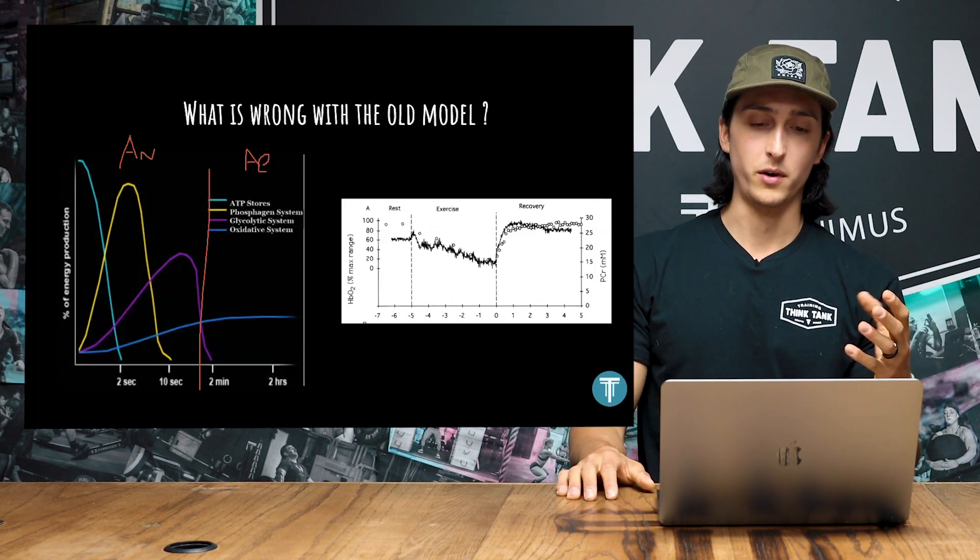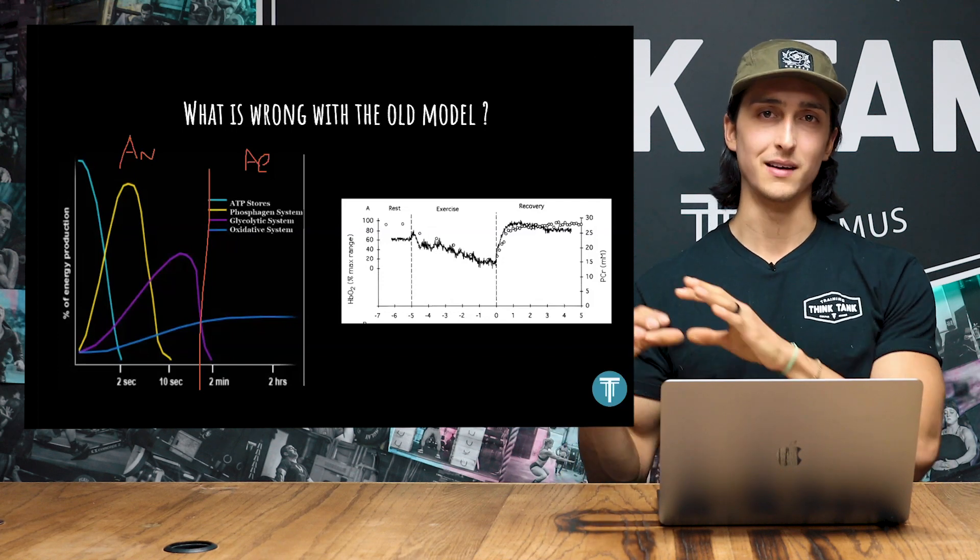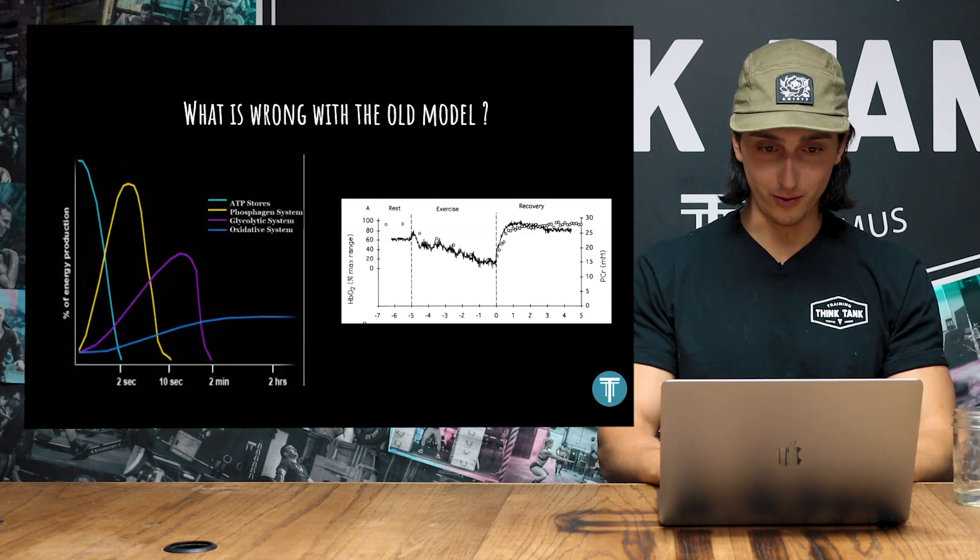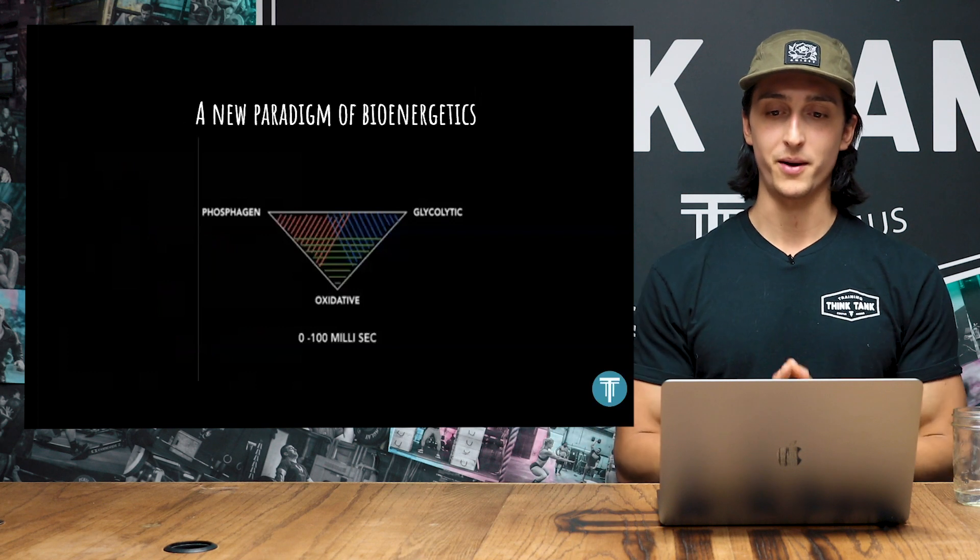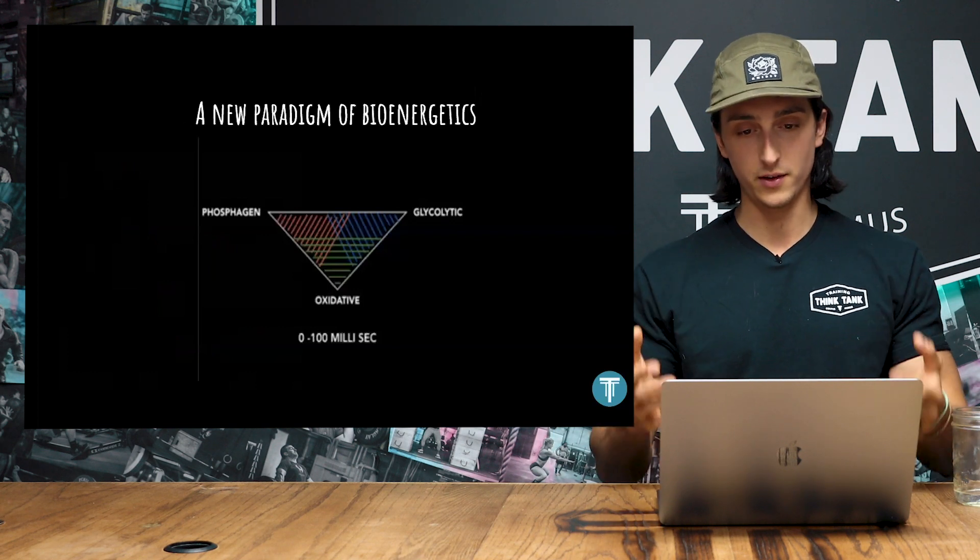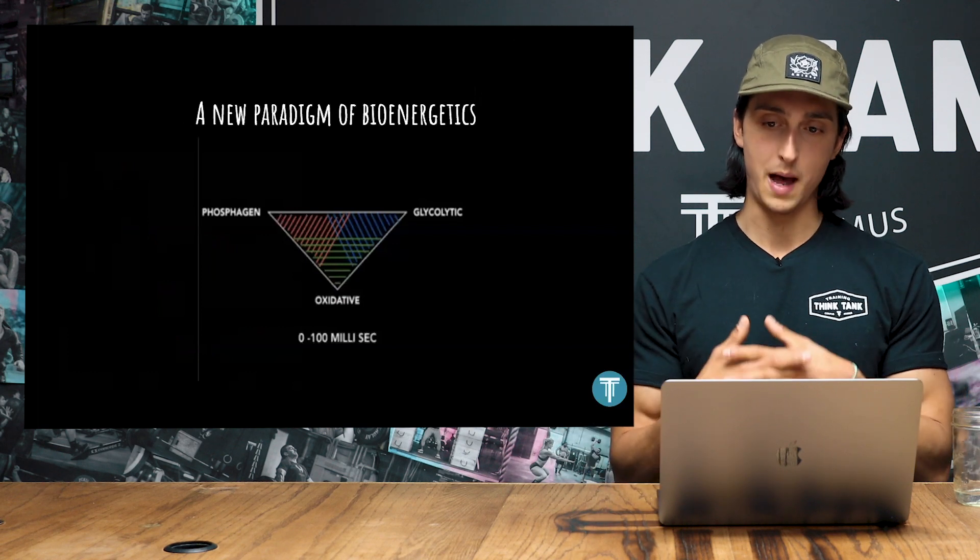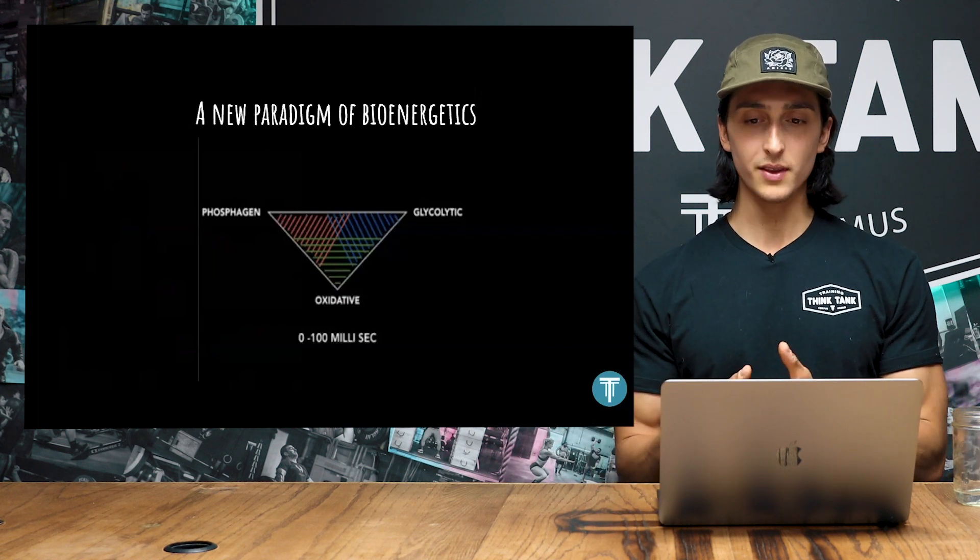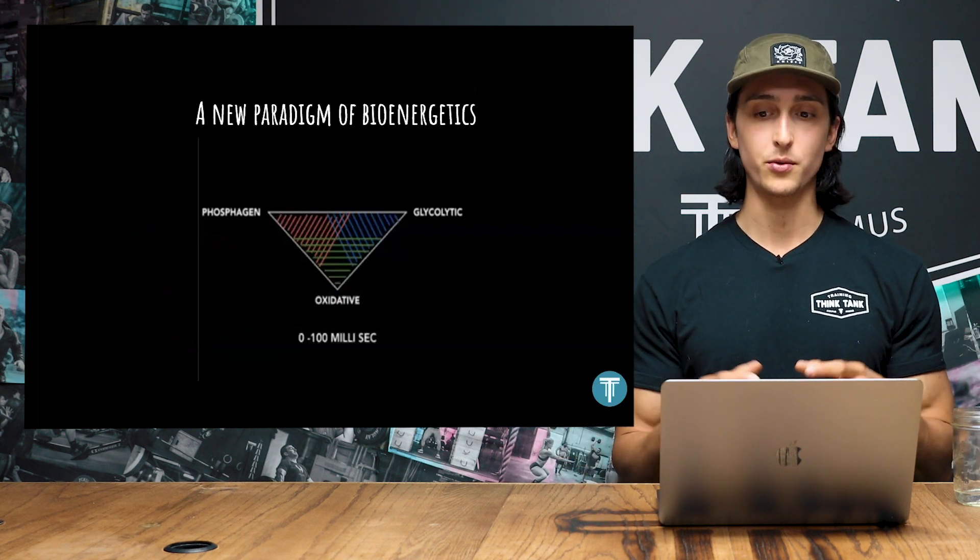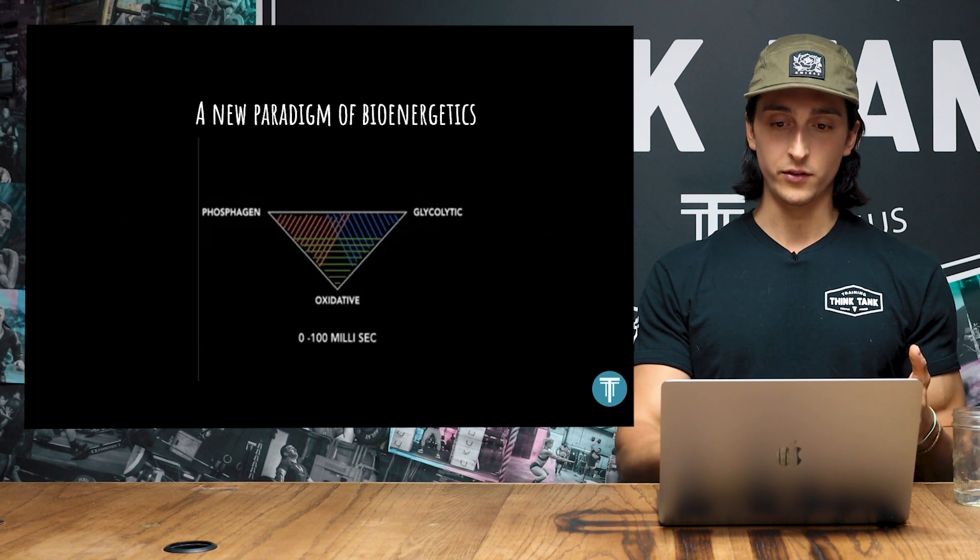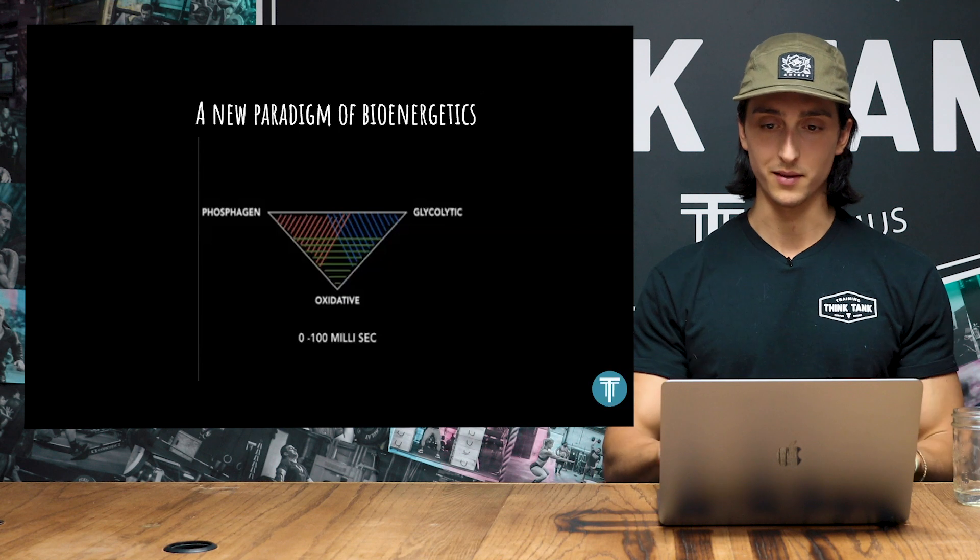So this leads us to what I'll refer to as more of a contemporary model of bioenergetics, which we'll touch on the next slide, and then we'll get into some more practical stuff. So this is the new paradigm of bioenergetics. In this chart, you see we still have the phosphagen, glycolytic, and oxidative pathways, but you can see that all of them are overlapping at all times in this model. And instead of that time frame being from seconds to minutes to hours, it's zero to 100 milliseconds.